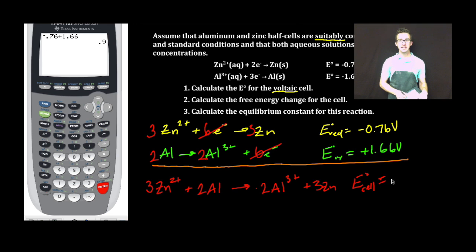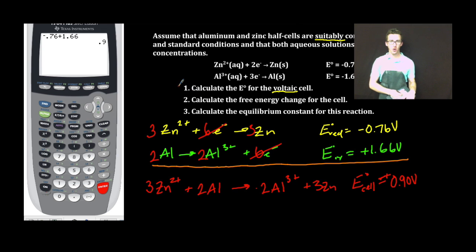Be careful with significant figures here. 0.90 volts, and it's positive, which we would expect. So boom, we have calculated the cell potential for the voltaic cell.